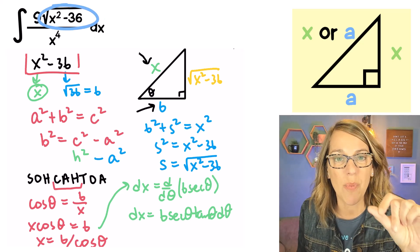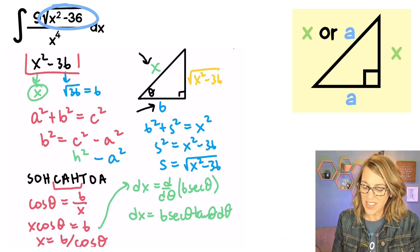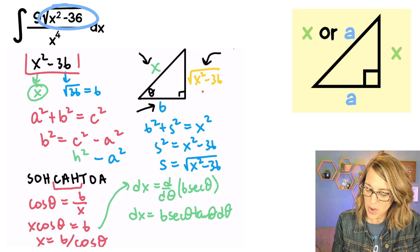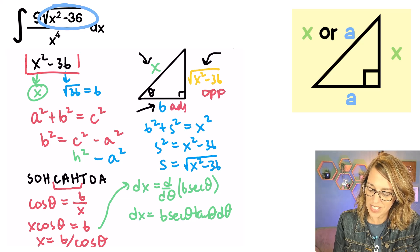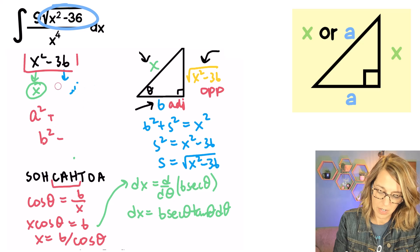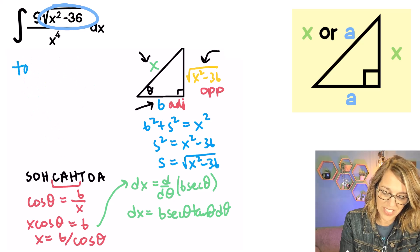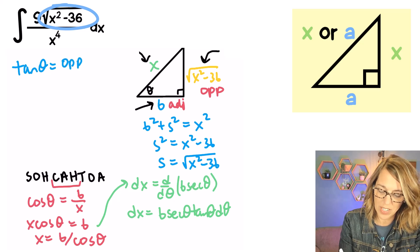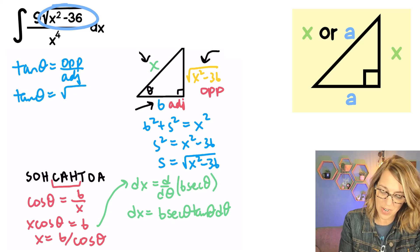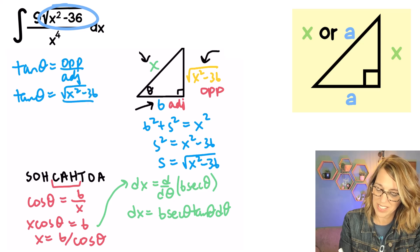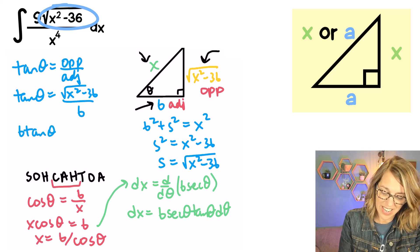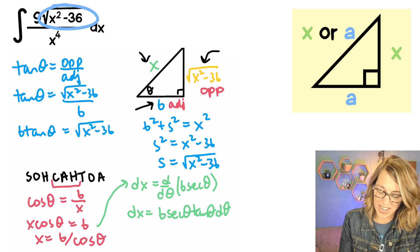Finally, I need to replace x squared minus 36. That expression lives on the vertical leg of the triangle — the opposite side — so I'll combine it with the adjacent side using tangent. The tangent of theta equals opposite over adjacent, which gives us the square root of x squared minus 36 divided by 6. Therefore, 6 tan theta replaces the square root of x squared minus 36.